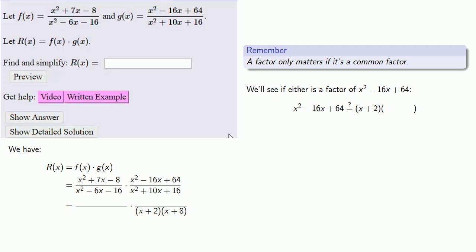So is x squared minus 16x plus 64 equal to x plus 2 times something? Well, since our constant term is positive 64, our something has to be x plus 32. So we'll check it. And no. But maybe it's x plus 8 times something. Well, if it is, that something has to be x plus 8. So we'll check it out. I'd be very disappointed.